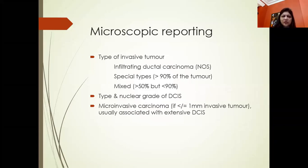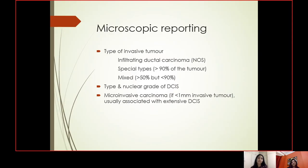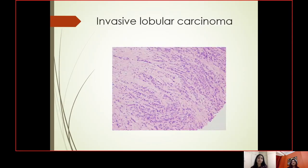Coming to microscopic reporting: first, tell the type of invasive tumor — for example, whether it is infiltrating ductal carcinoma NOS, any special types, or mixed types. In mixed types, mention what types are present and in what percentages. Then note the type and nuclear grade of DCIS, and microinvasive carcinoma in cases of extensive DCIS. Examples shown include mucinous carcinoma and invasive lobular carcinoma.